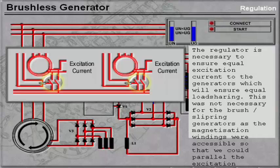The regulator is necessary to ensure equal excitation current to the generators, which will ensure equal load sharing. This was not necessary for the brush slip ring generators, as the magnetization windings were accessible, so that we could parallel the excitation current wires to avoid unequal load sharing.